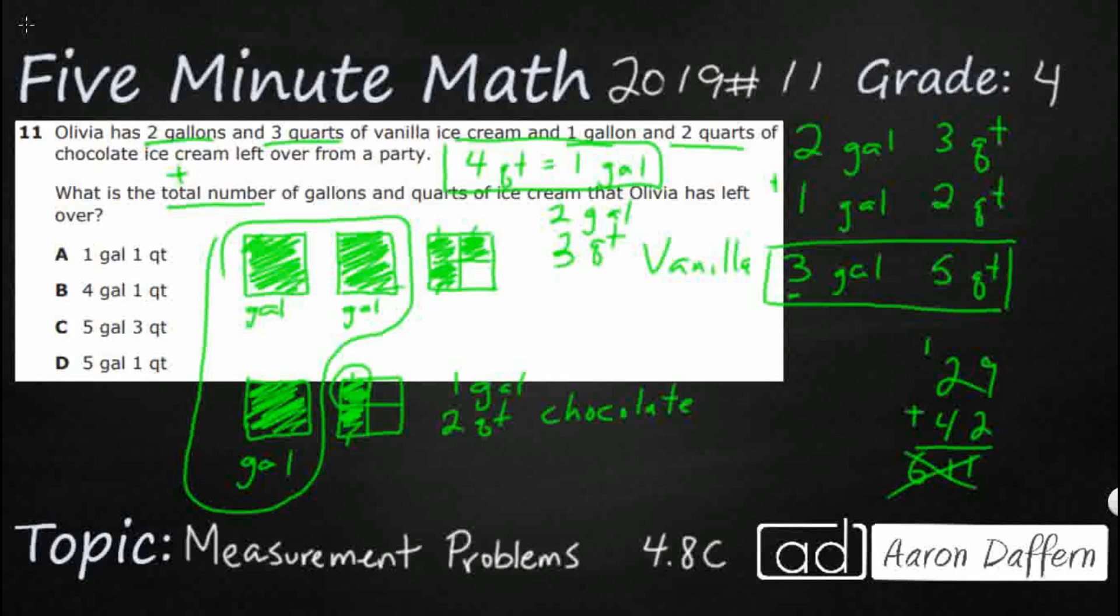What if we took one of these quarts here, moved it up here, and use it to fill in that empty quart spot. Now look what I've got. I've got an extra gallon. I've got one, two, three, four gallons. And then I've only got this one little quart left. So four gallons and one quart—that's the way we can represent this answer. Here it is, B.